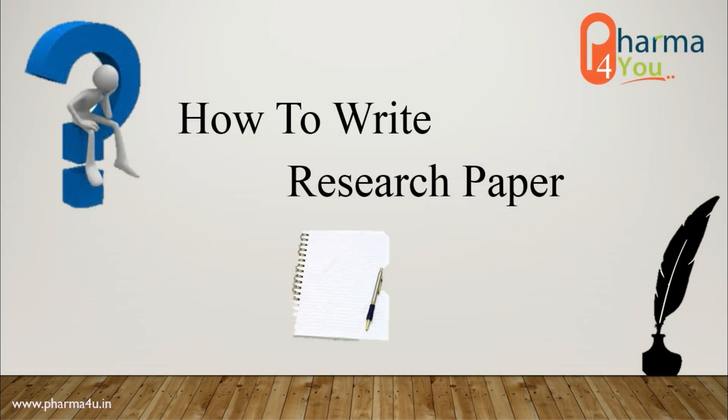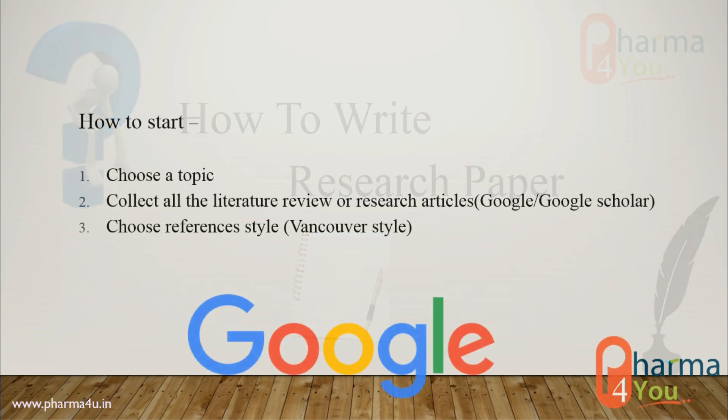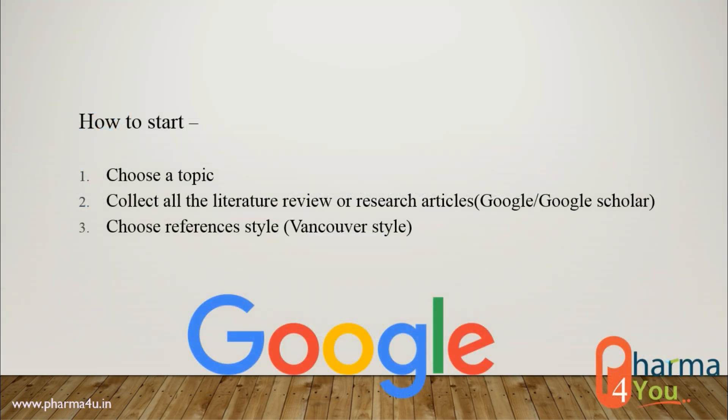How to write a research paper. A few important points give you information about how you can write a research paper. 1. Choose any topic which you want to write a research article — the topic should match the research work you have done. 2. Collect all the literature review articles and research articles. 3. Choose a reference style. Vancouver style is commonly used. In the next slide we show you the sequencing of paragraphs which you write in your article.